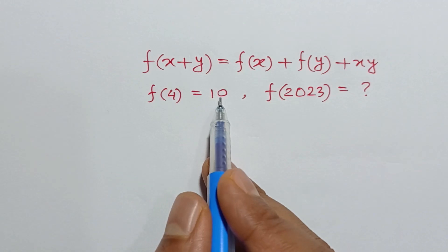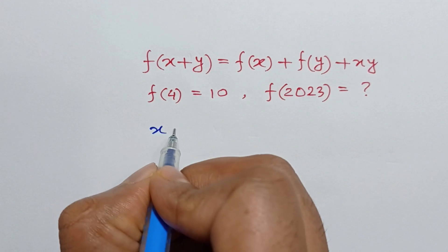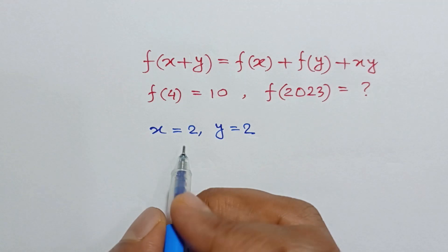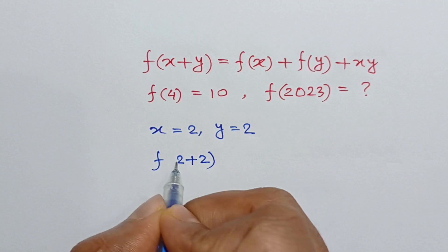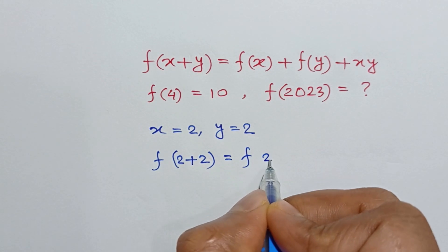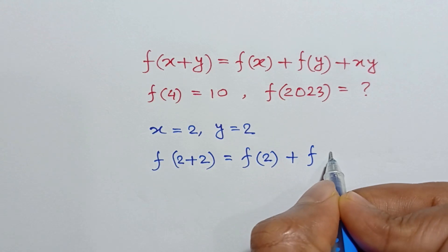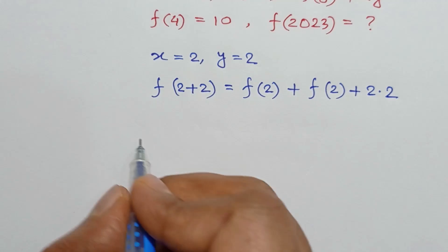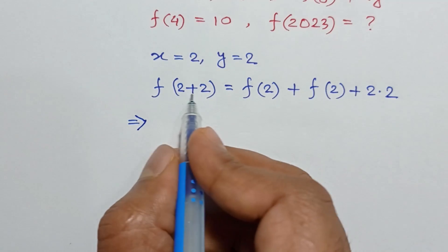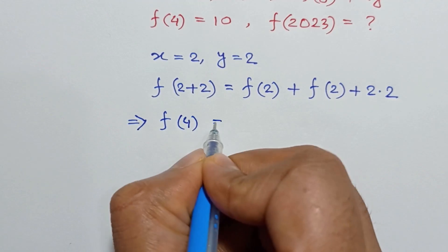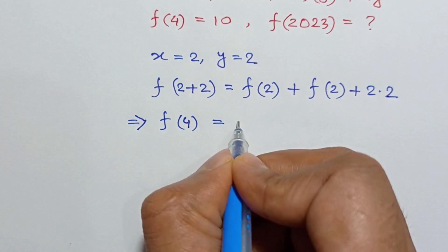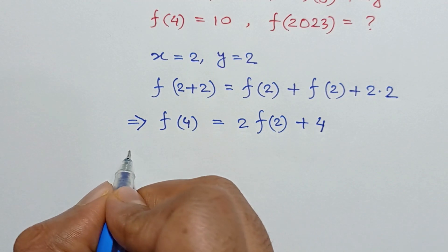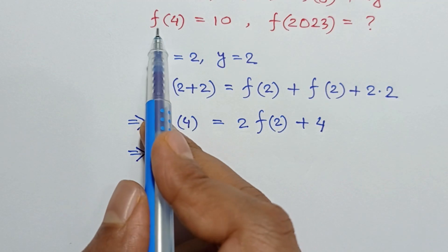Substituting x=2 and y=2 into our main function, we will have f(2+2) = f(2) + f(2) + 2×2. So 2+2 is 4, meaning f(4) = 2·f(2) + 4.